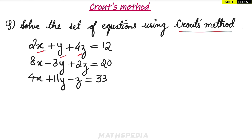The second important thing is that the constants b1, b2, b3 should always be on the right-hand side of the equation — on the RHS. Once that is ensured, we can proceed to form the A matrix, B matrix, and X matrix.